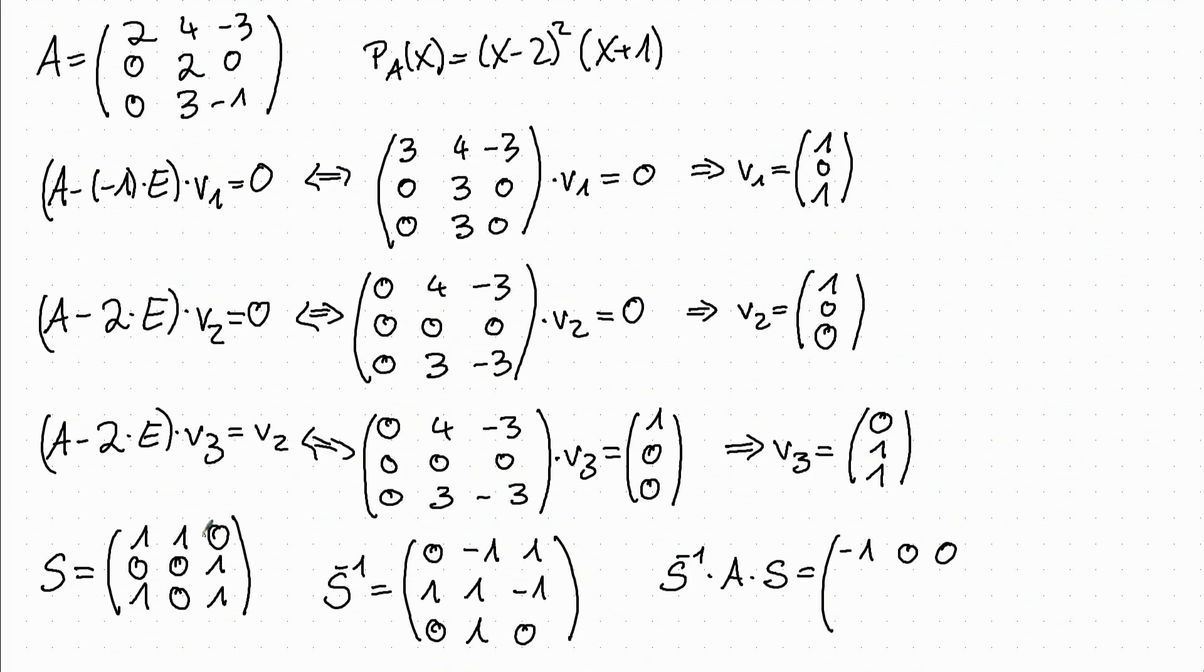And then we have the next Jordan block, which is of size 2, since those two vectors belong together. And it is 0, 2, 1, 0, 0, 2.